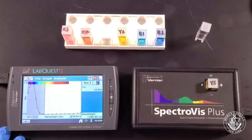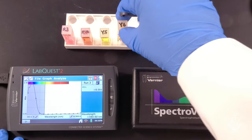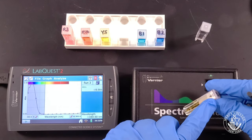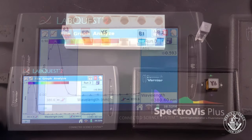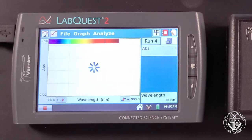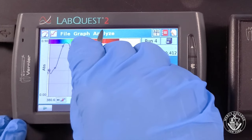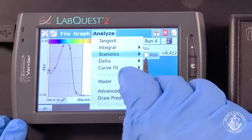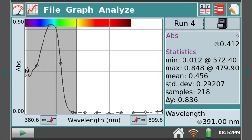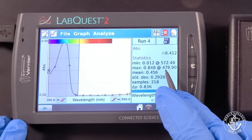Again clear your statistics and prepare to analyze another sample. Repeat the same analysis procedure for each of your remaining dye standards. Here we see that this dye sample also absorbs in the blue-violet region of the spectrum. The dye appears to have a maximum absorbance of 0.848 at a wavelength of 479.9 nanometers.